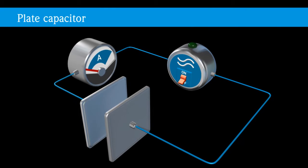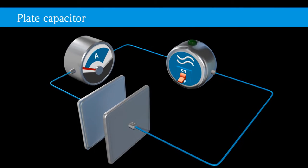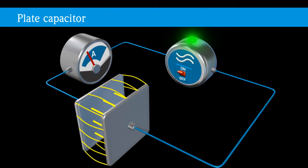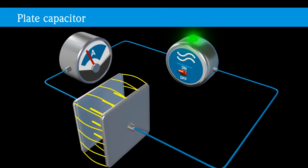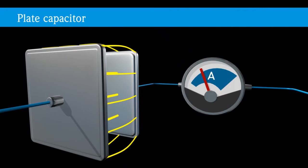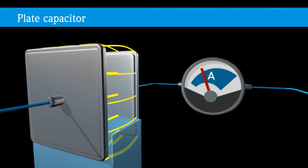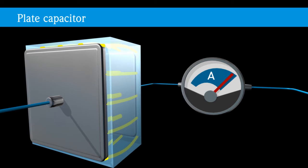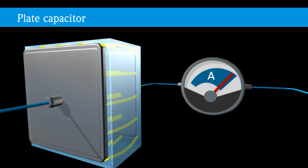If an alternating voltage is applied to a parallel plate capacitor, current starts flowing. The strength of the current depends on the dielectric material between the plates, for example air or a medium. The dielectric material increases the capacity of the capacitor and thus the current flow.